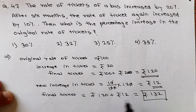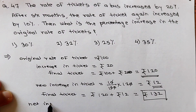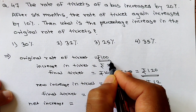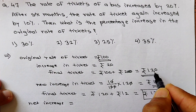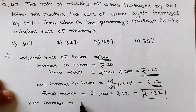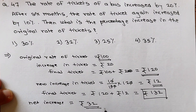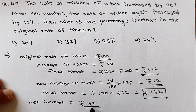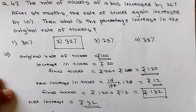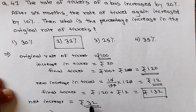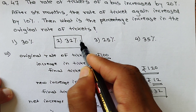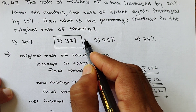What is the net increase? Net increase = ₹132 − ₹100 = ₹32. Since our original was considered as ₹100, we can directly say the percentage increase is 32%. That is the second option. Percentage increase is 32% because the base value is also 100. So our answer is 32% increase.